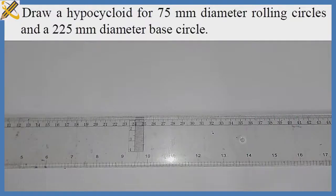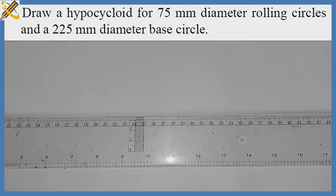Welcome to today's construction class. For today's class we'll be looking into the construction of a hypocycloid, with a 75mm diameter rolling circle and a base diameter of 225mm.